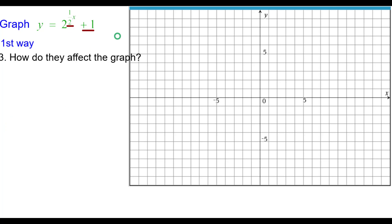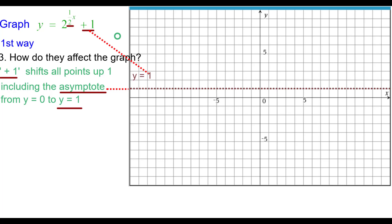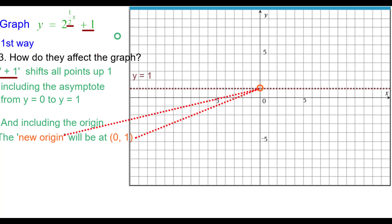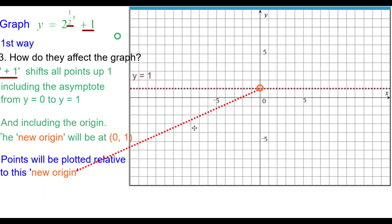How do they affect the graph? The plus 1 shifts all points up 1 including the asymptote which means it's going from the line y equals 0 to the line y equals 1. Also the origin is going to be affected by that plus 1. The new origin in fact is going to be at 0 comma 1 since the plus 1 doesn't affect the x coordinate. All points will be plotted relative to this so called new origin.